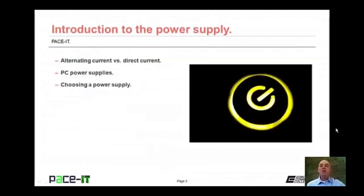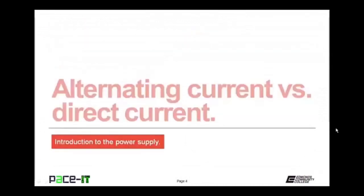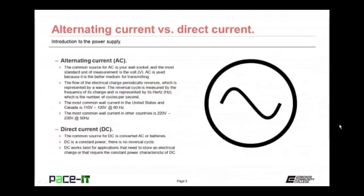Welcome to PACE IT's session on the introduction to the power supply. Today we're going to talk about alternating current versus direct current, the PC power supply itself, and some things you need to consider when choosing a power supply. We begin by talking about alternating current, AC. The common source for AC is your wall socket, and the most standard unit of measure of AC is in volts. We use alternating current because it's a better medium for transmitting power, especially over distance. A characteristic of AC is that the electrical charge periodically reverses, which is represented by a wave. The reversal cycle is measured by its hertz value — the number of cycles per second.